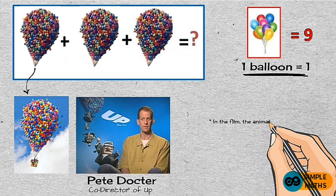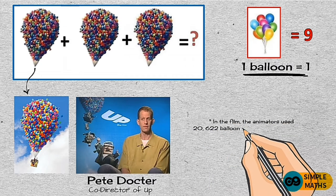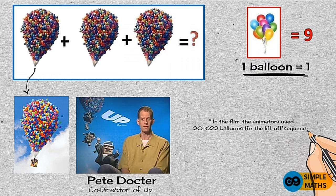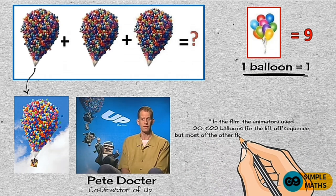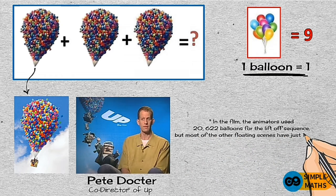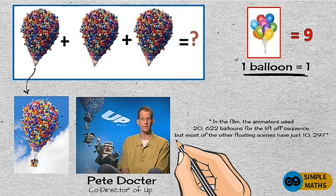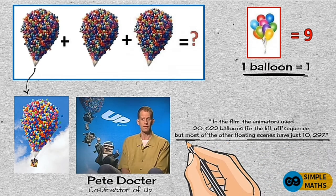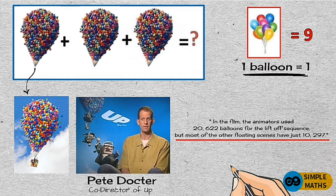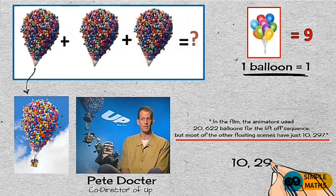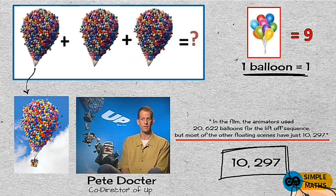Pete Docter, the co-director of this amazing animated movie, said the following in one of his interviews: In the film, the animators used 20,622 balloons for the lift-off sequence, but most of the other floating scenes have just 10,297. There it is, the magic number that we're looking for, coming from the animators themselves. The exact number of balloons used in this scene is 10,297.